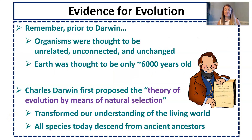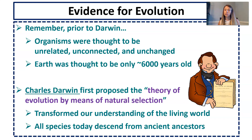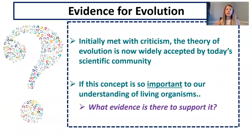Let's back up and refresh our memories. Prior to Darwin, organisms were thought to be unrelated, unconnected, and completely unchanged, and the earth was thought to be about 6,000 years old — fairly young. Charles Darwin was the first to really propose the theory of evolution by means of natural selection, which transformed our understanding of the living world and made the bold claim that all species today descend from ancient ancestors. While initially met with criticism, the theory of evolution is now widely accepted by the scientific community. So what evidence is there to support it? That's what we're looking at today.